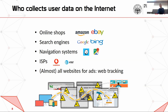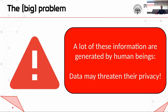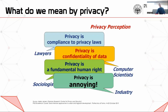So with this big data comes also a big problem. A lot of this information is generated by us — we are human beings, and so this data might threaten our privacy. There's a different privacy perception if you speak to different entities. For industry, privacy is something annoying because they need to respect some rules. For computer scientists, it's confidentiality of data. For sociologists, it's a fundamental human right. For lawyers, it's compliance to some laws. So the perspective might change.